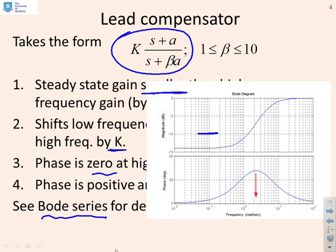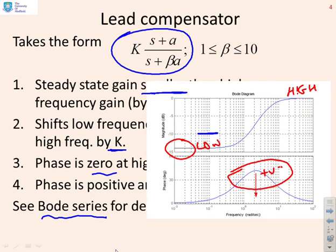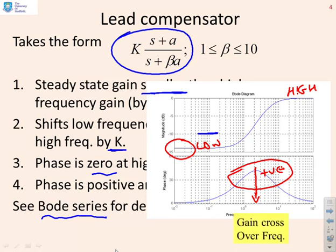Here's a typical diagram showing what a lead compensator looks like. You see you have low gain at low frequencies and high gain at high frequencies. Similarly, if you look at the phase, you've got positive phase. The reason this arrow is here is to tell you something really important: we would expect the gain crossover frequency to be somewhere close to the peak in the phase plot. And that's very different from what we did for the lag design.